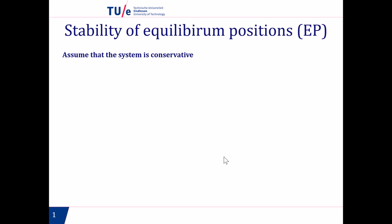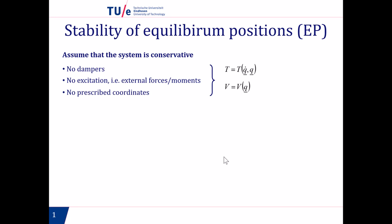If we assume that a system is conservative, what we are saying is that there are no dampers in the system, that there is no excitation, there are no forces or moments acting on the system, and there are no prescribed displacements or prescribed coordinates. Then the kinetic energy depends on the generalized velocity and the generalized displacement, and the potential energy depends on the generalized displacement.